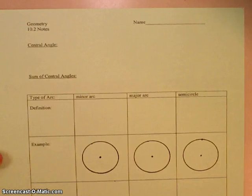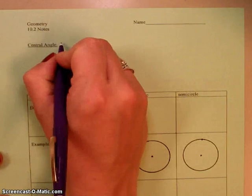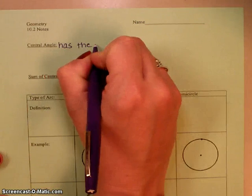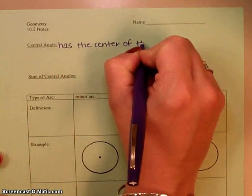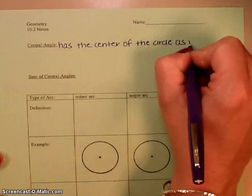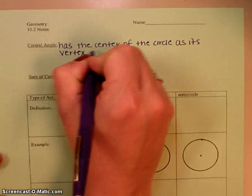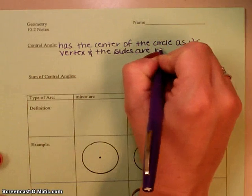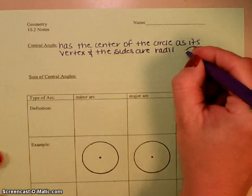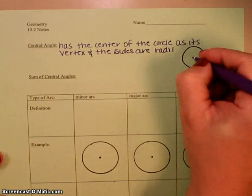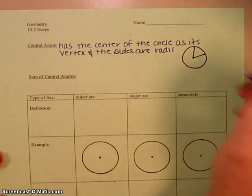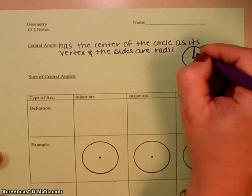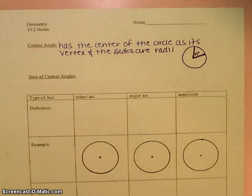The first item that we're going to take a look at is what we call a central angle. A central angle has the center of the circle as its vertex and the sides are radii. So that's plural for radius. So what that means is if I have a circle, here's the center, so that's the vertex of my angle, and then the sides of my angle are radii. So I would say that that's like n degrees, for example. And we use an n to signify that. We're going to be doing a little bit of work with central angles today.